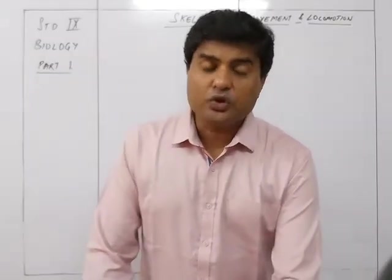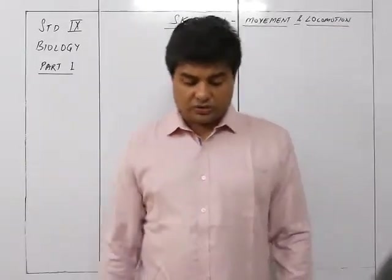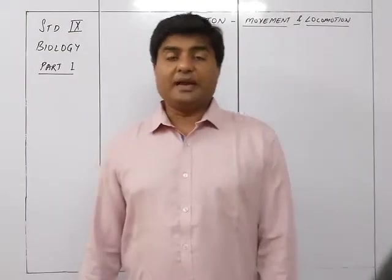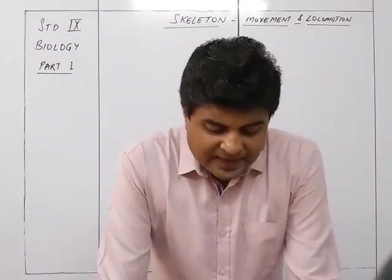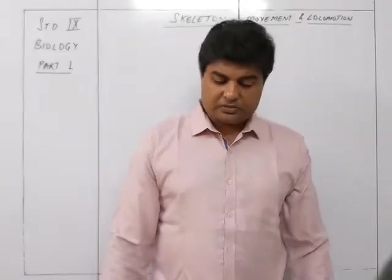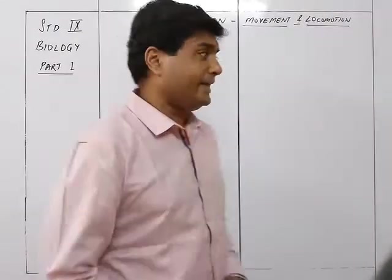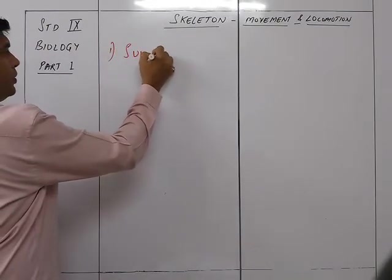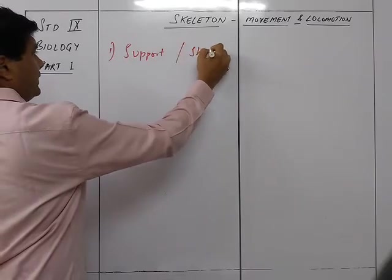Now let's see the functions of the human skeleton. There are basically six different functions of the human skeleton. The skeleton in our body serves six main purposes. The first one is support and shape — the first thing the skeleton does is give support and shape to the body.